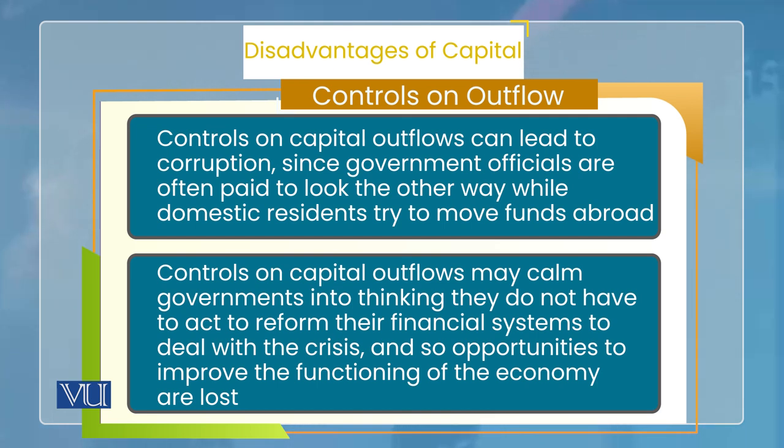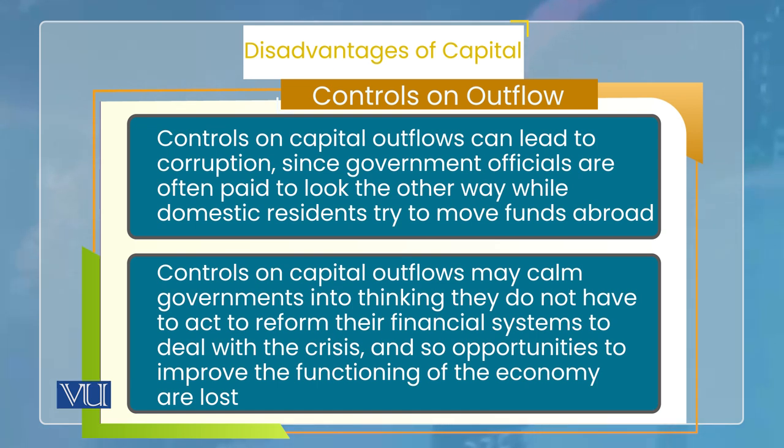ایک اور بڑا disadvantage یہ ہے کہ capital control کی policy تب adopt کی جاتی ہے جب economy میں کوئی problem ہو جائے۔ یاد رکھیں، جب بھی کوئی problem ہوتا ہے economy کے اندر، اس کا ایک first best solution ہوتا ہے — اور first best وہ ہوتا ہے کہ جہاں problem ہے، اس problem کو ٹھیک کیا جائے۔ اگر آپ capital کی flight کو روک دیں، تو اس کا مطلب ہے آپ نے اصل problem سے نظریں اٹھا لیں اور جو اس کا end result تھا اس پر policy بنا دی — تو یہ ایک disadvantage ہوگا۔